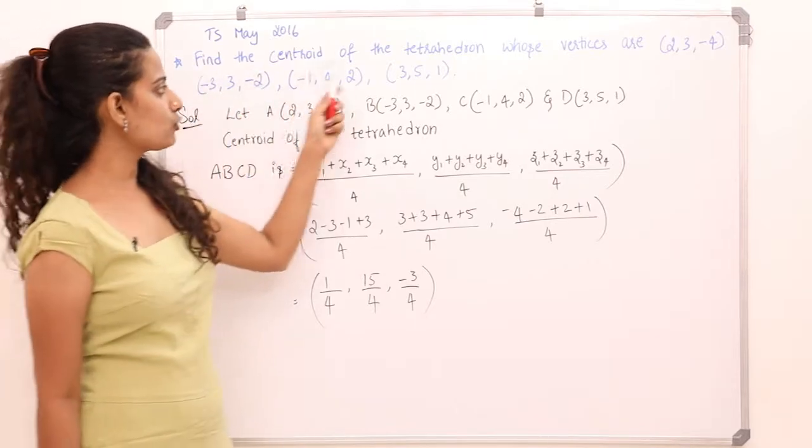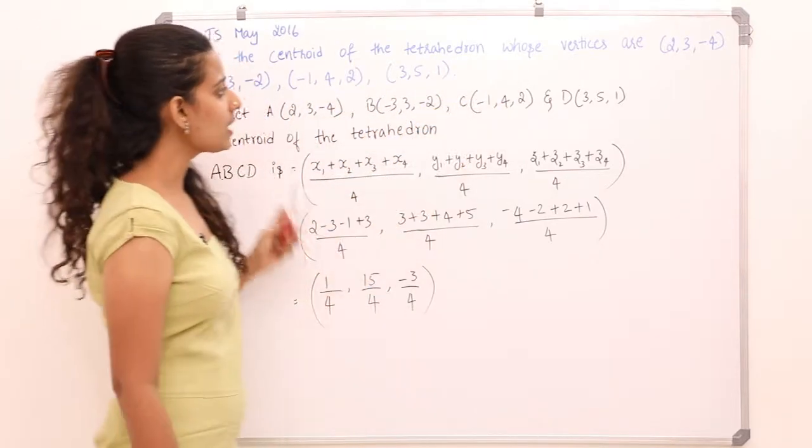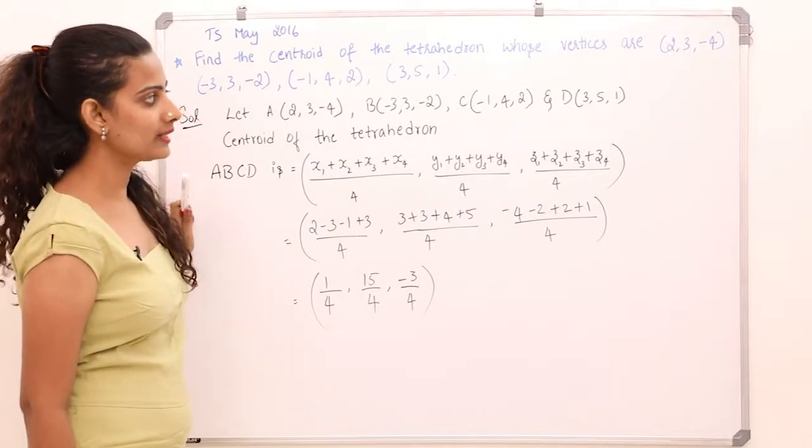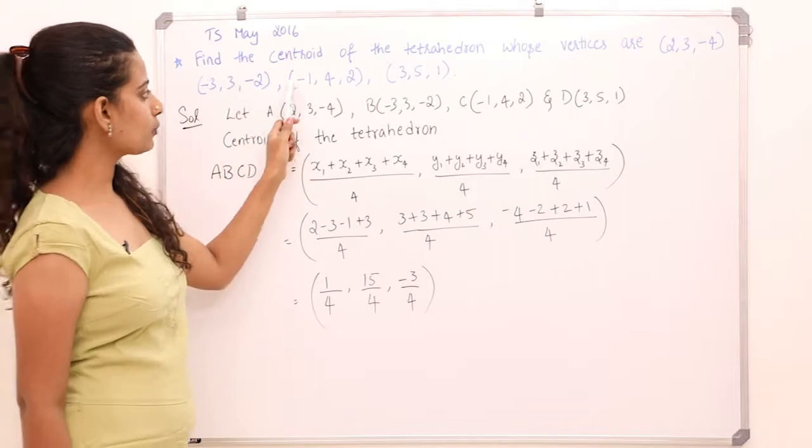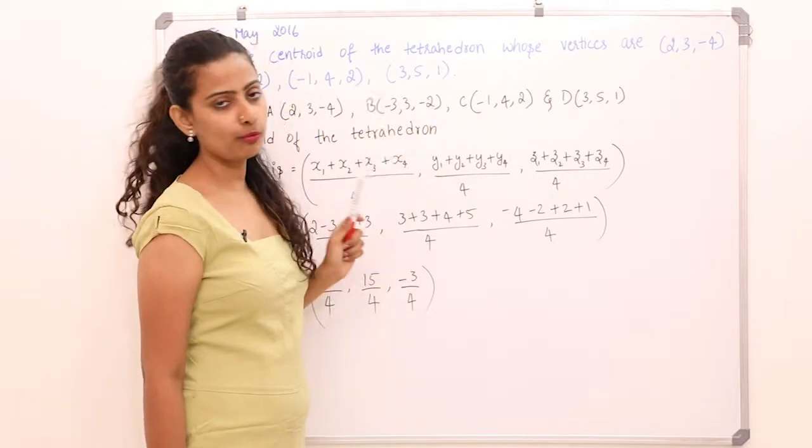Question is, find the centroid of the tetrahedron whose vertices are (2, 3, -4), (-3, 3, -2), (-1, 4, 2) and (3, 5, 1).